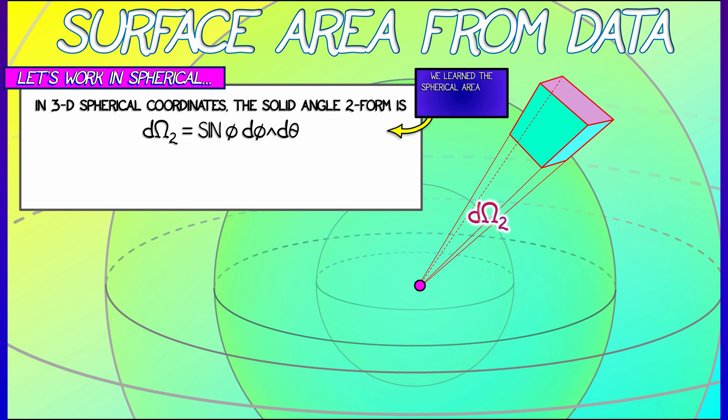Now, you might want to go back and review your spherical coordinates. I've used this particular ordering, dφ wedge dθ, in order to get the orientation on the sphere correct so that you have an outward pointing normal.